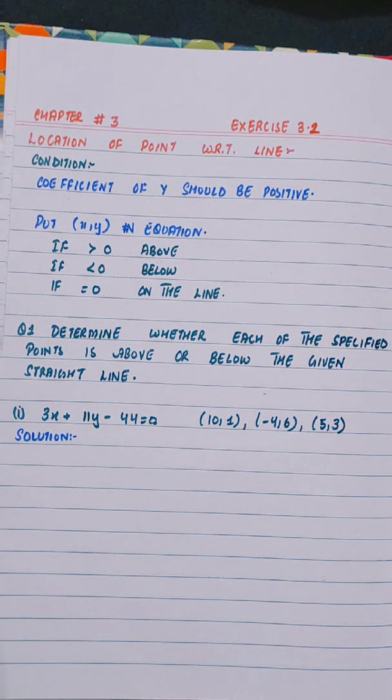Then put x, y in equation. If your answer is greater than 0, means positive, the point is above the line. If less than 0, the point is below the line. And if equals to 0, it means the point is on the line.